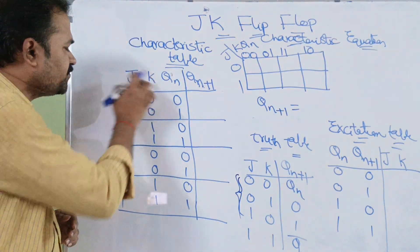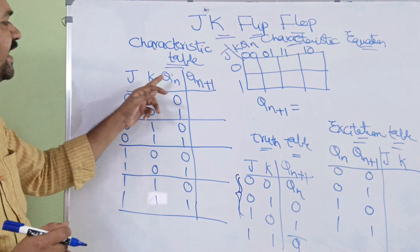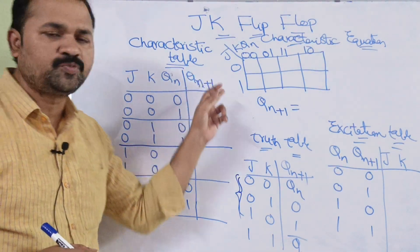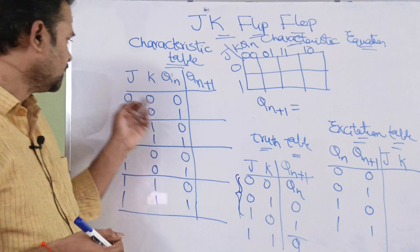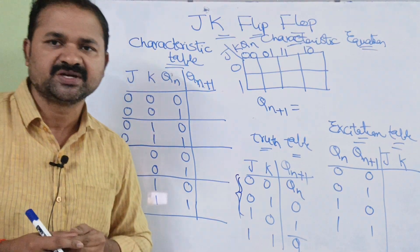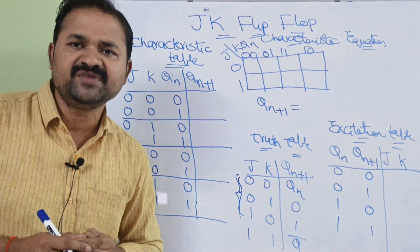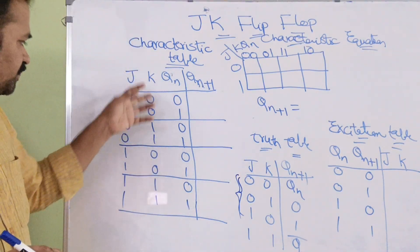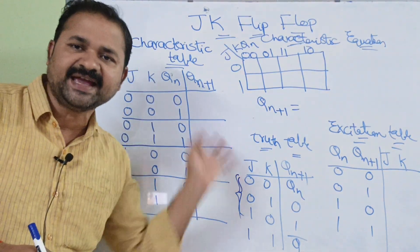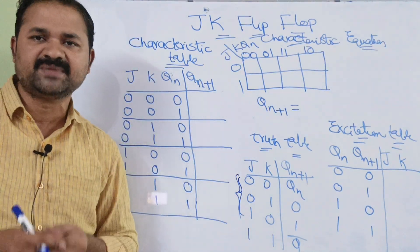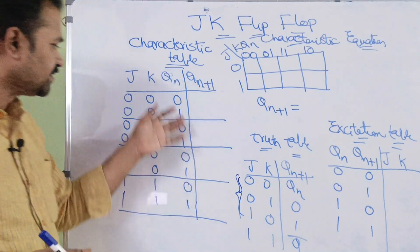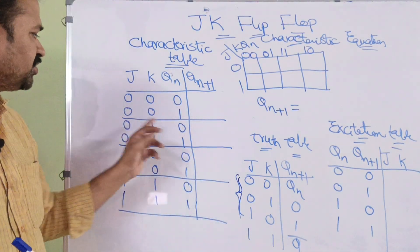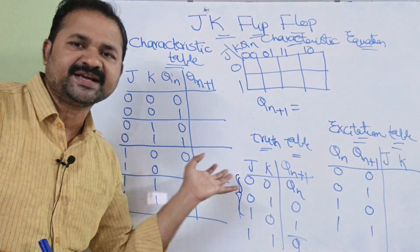Now let us design the characteristic table based upon the truth table. Here we have 3 inputs: J, K, and Qn, and it produces 1 output Qn+1. So with 3 inputs, we will have 2³ = 8 combinations. For 8 decimal numbers from 0 to 7, the binary notation is written: 000, 001, and so on.